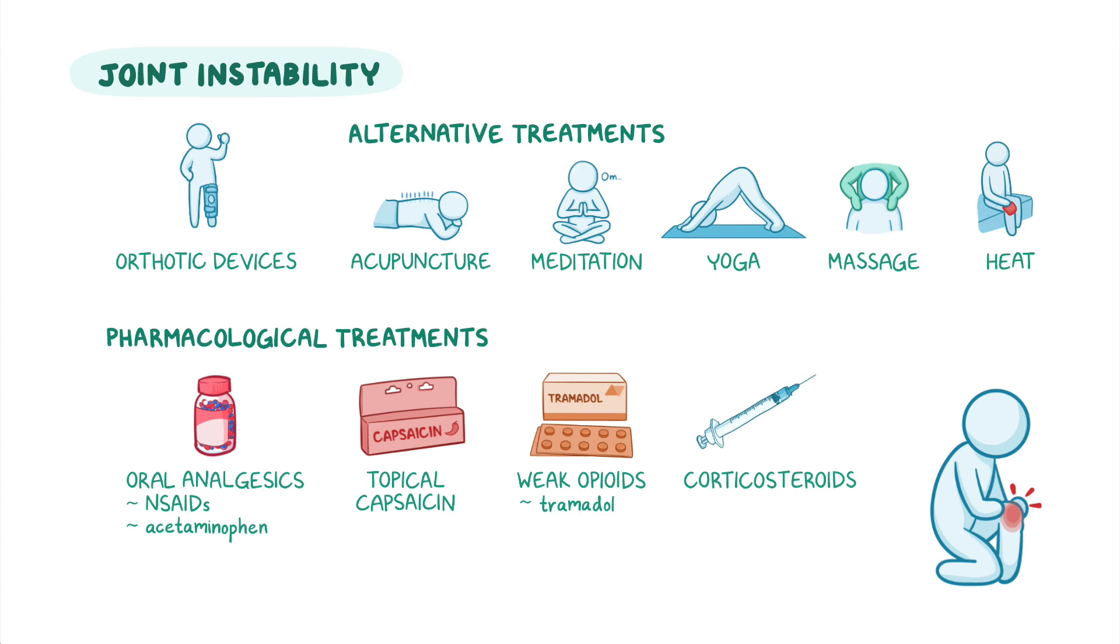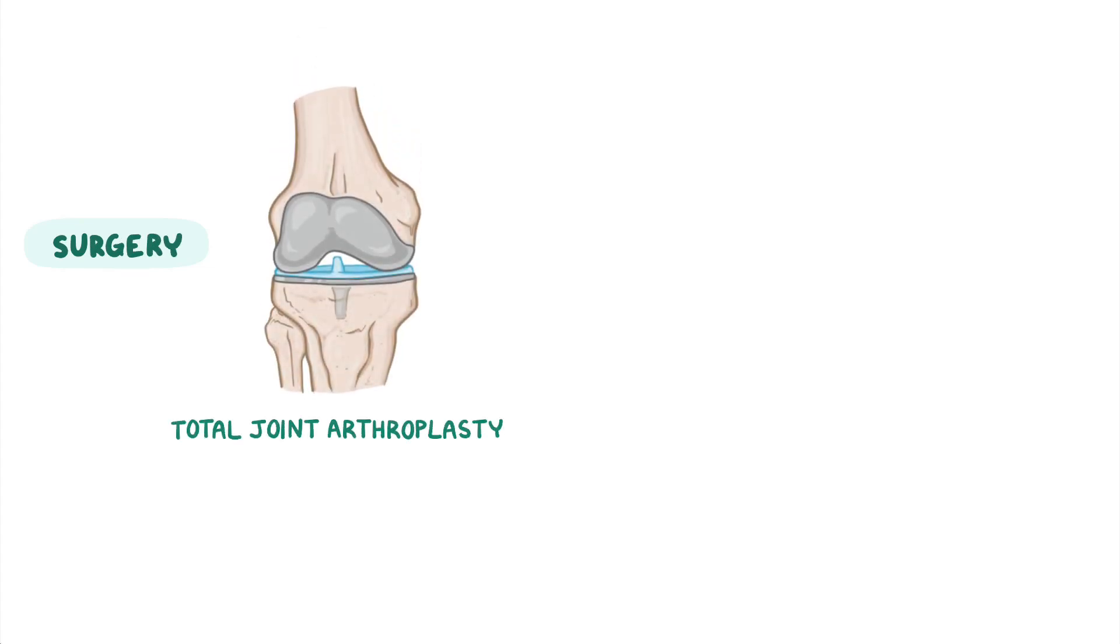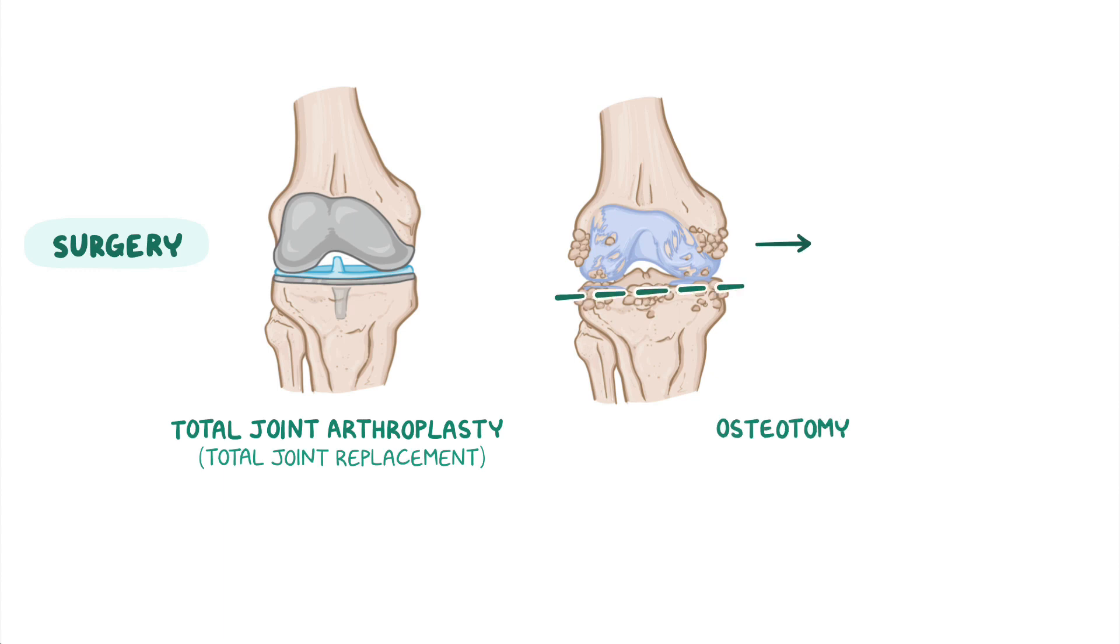If none of these treatment options are successful, the client may need surgery, usually in the form of total joint arthroplasty, also known as total joint replacement, in order to replace the affected joint. Less commonly, an osteotomy can be performed, where bones are cut and realigned to relieve pressure and pain.